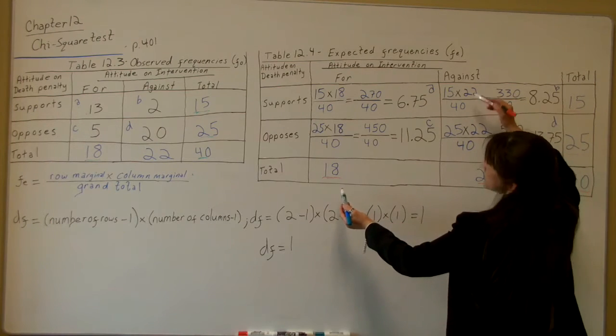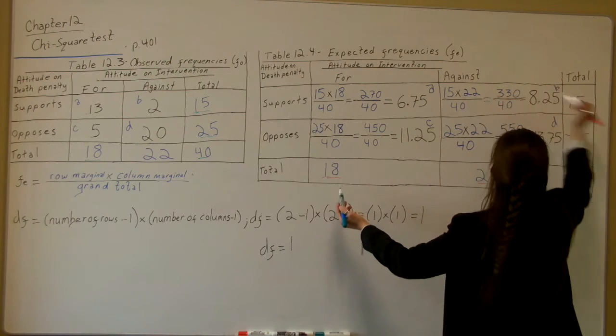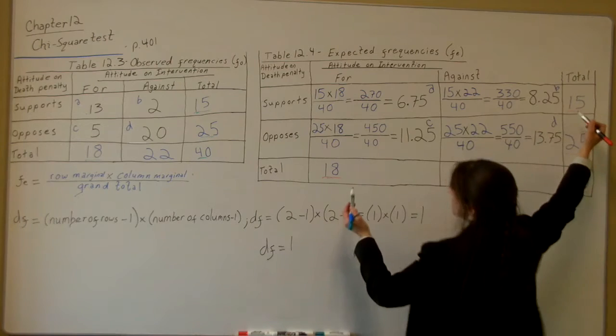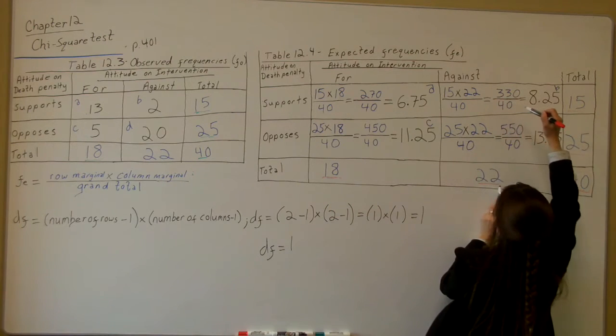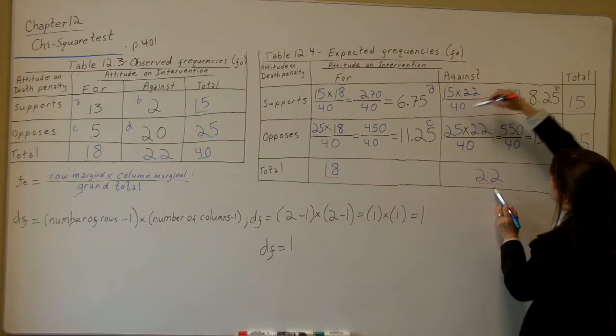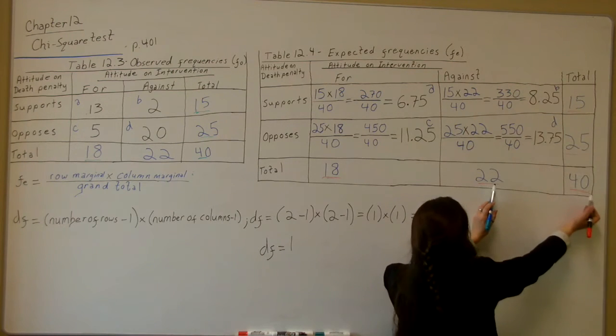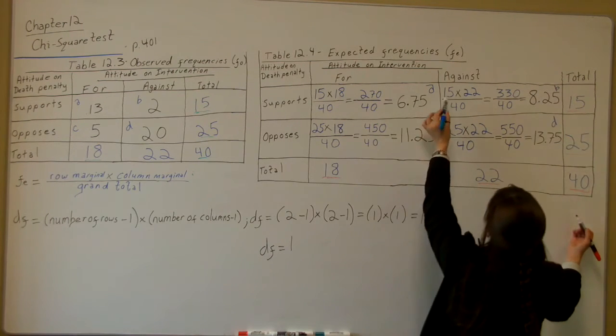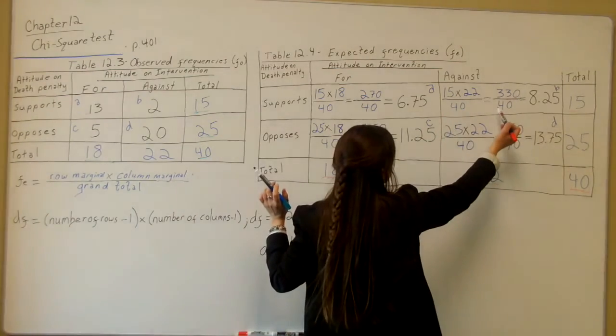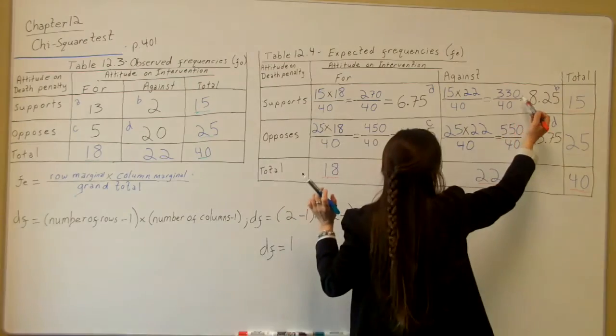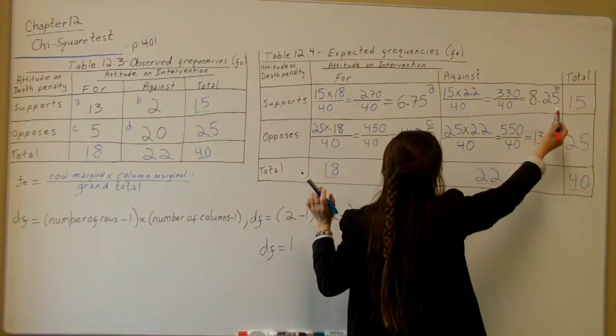Back to this. The B. It's your row marginal, which is 15, times your column marginal, which is right here, 22, over your grand total, which is 40. So 15 times 22 equals 330 divided by 40. So 330 divided by 40 equals 8.25.